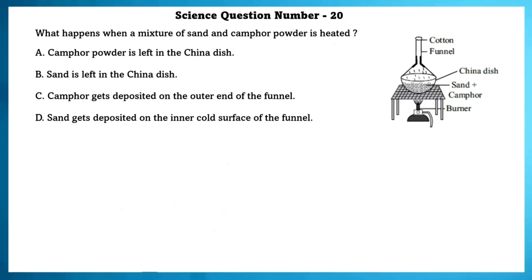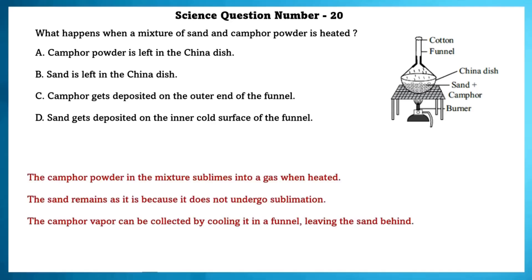Science question number 20. When a mixture of sand and camphor powder is heated, the camphor powder sublimes into a gas. The sand remains as it is because it does not undergo sublimation. The camphor vapor can be collected by cooling it in a funnel, leaving the sand behind. So option B is correct — sand is left in the china dish.